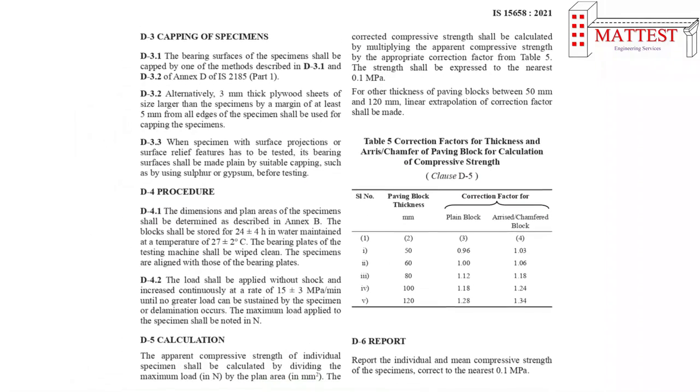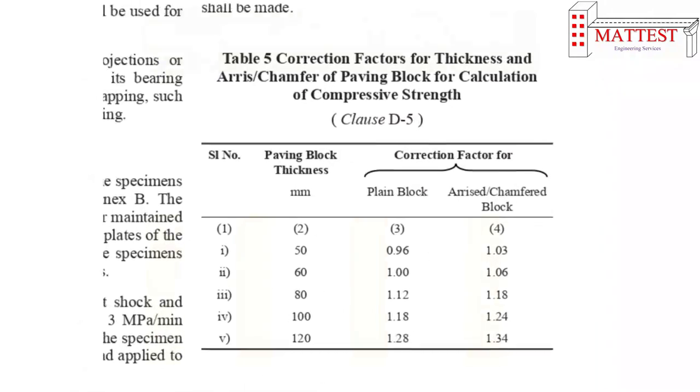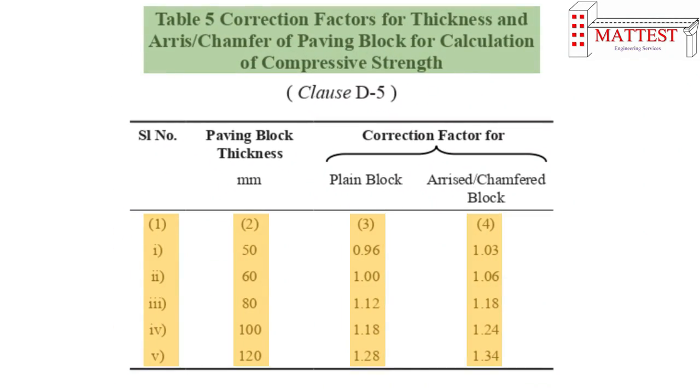As per IAS code 15658-2021, correction factors for thickness of paving blocks are given below. Correction factors are given for plain and arised or chamfered blocks with thicknesses of 50mm, 60mm, 80mm, 100mm, and 120mm.